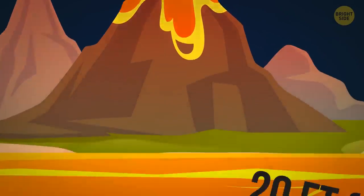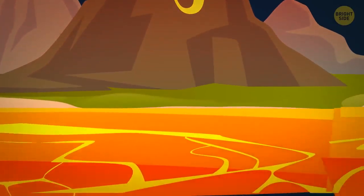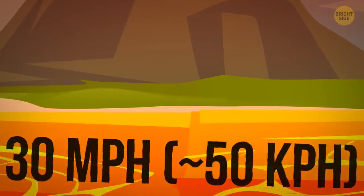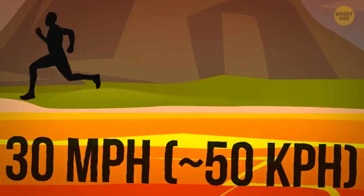Lava can move slowly at about 20 feet a minute, a fraction of the average person's walking speed. Or it can flow as fast as 30 miles per hour, which even the fastest person on Earth can't outrun.